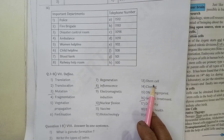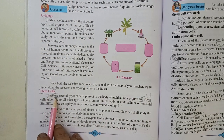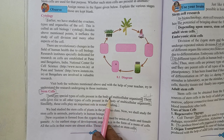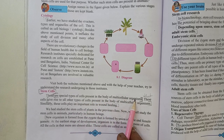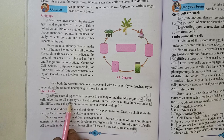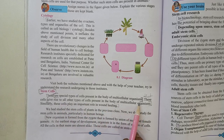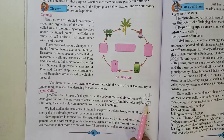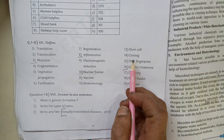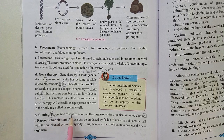Question 13: Define Stem Cell. Page number 88 — Stem cells are special types of cells present in the body of multicellular organisms that give rise to all other types of cells present in the body.